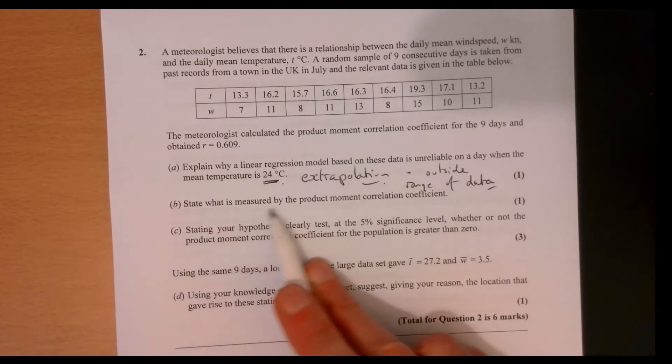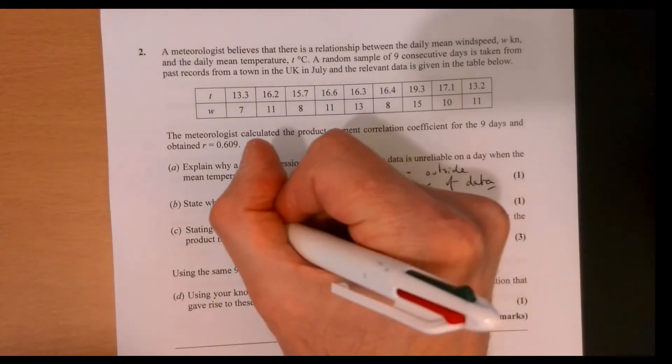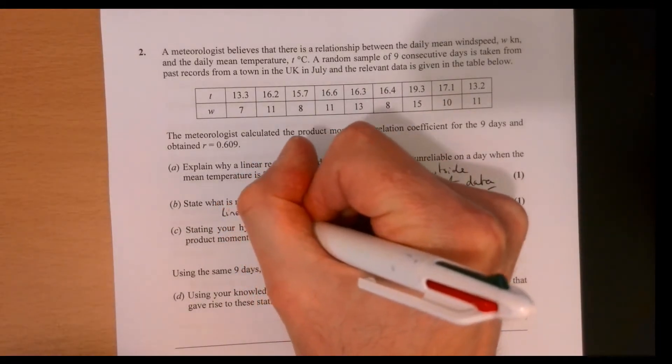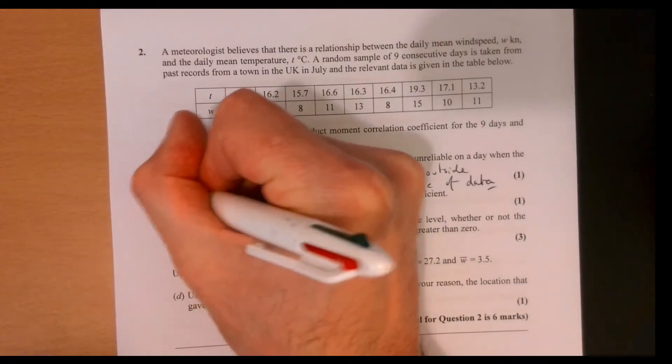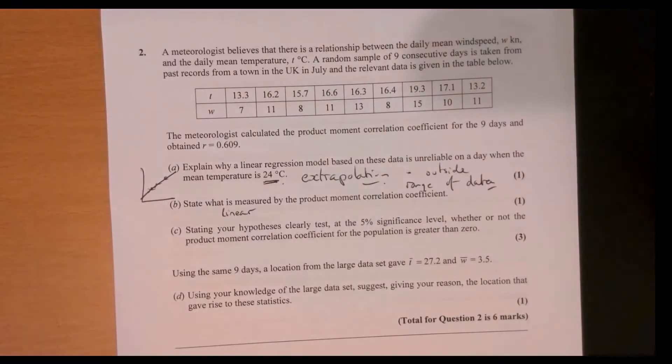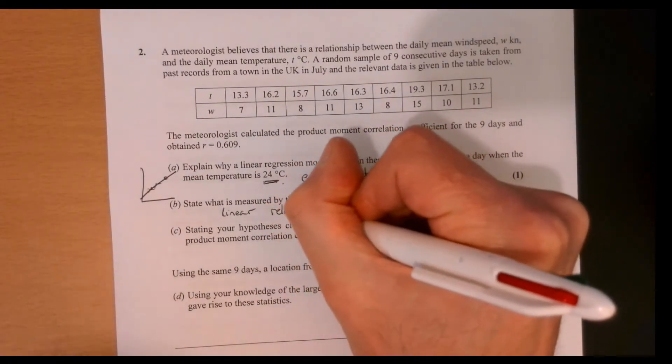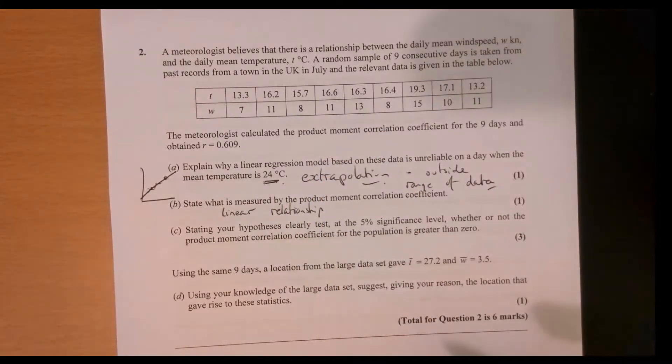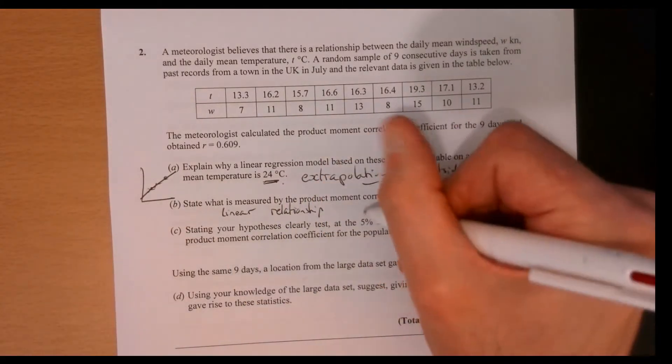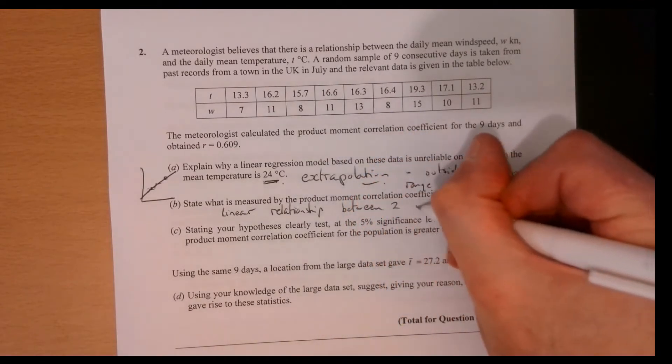Now it says, state what is measured by the product moment correlation coefficient. Well, you're trying to see if there is a linear, in other words, you're going to get your crosses, right? Are you going to get a straight line going through it? So is there going to be a linear relationship? It doesn't actually refer to this particular question. Linear relationship between two variables.